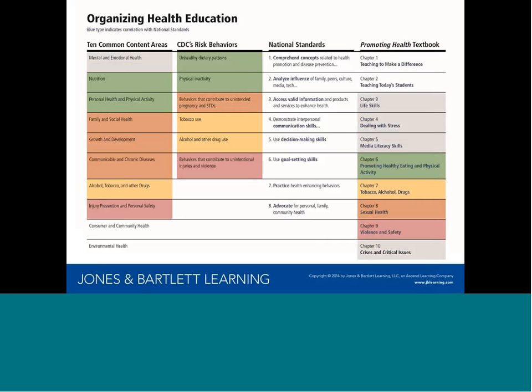The skill chapters — three, four, and five — also contain the content typically taught in mental and emotional health units. So if you're teaching that as an introductory unit, there you have it. Chapter 10 also contains emotional health content. Anyone teaching for very long will have to deal with critical issues in the classroom, and this chapter serves as a great summarizing chapter as well as addressing these issues.